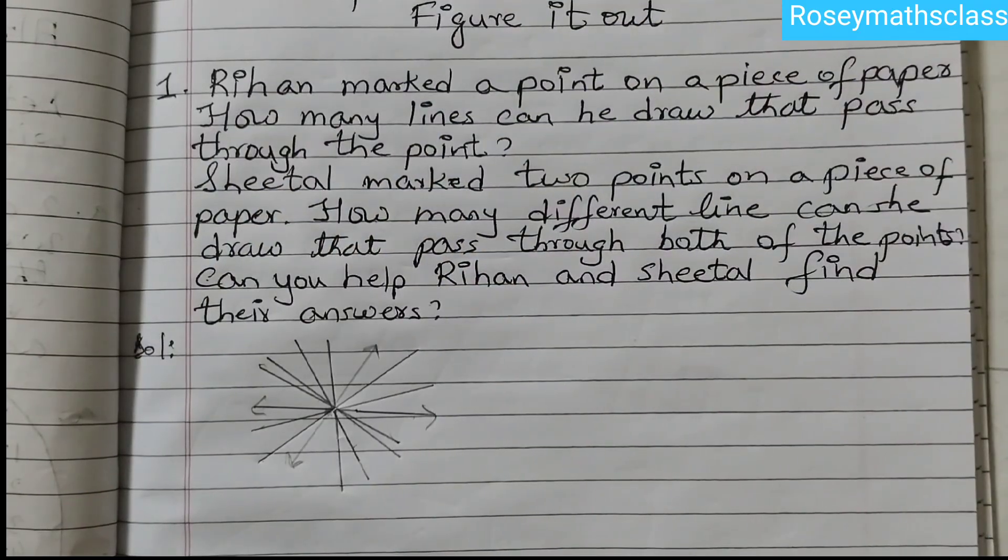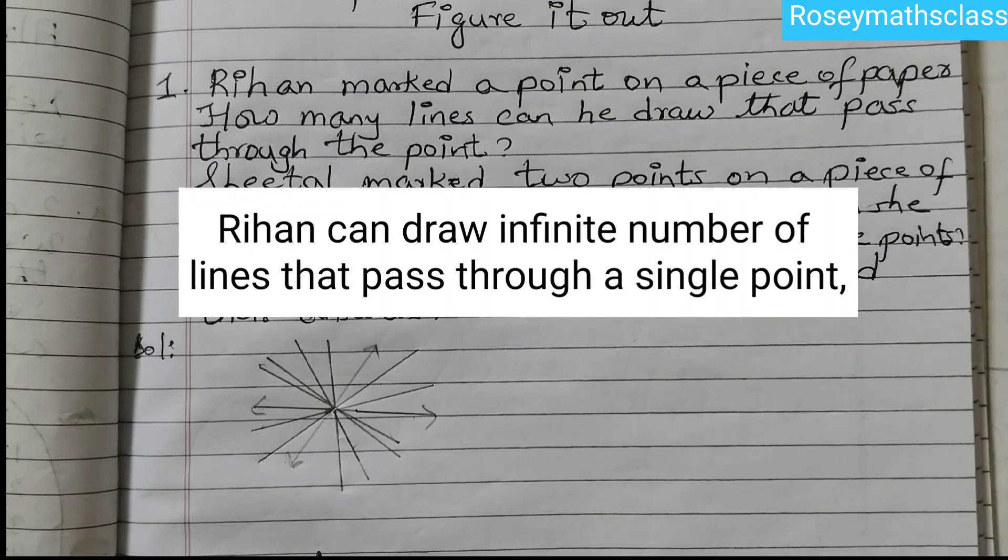The answer for the first one is, Rihan can draw infinite number of lines passing through a single point.